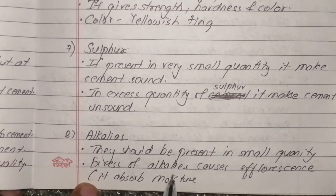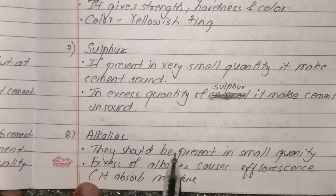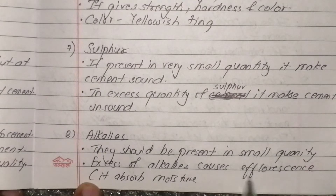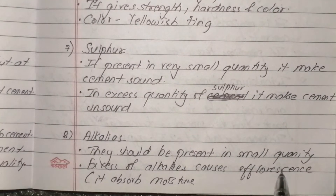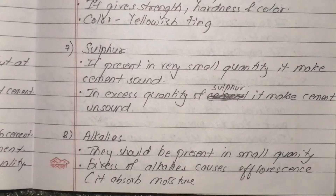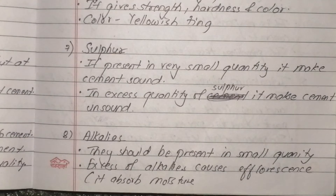Alkalis are present in small quantities. If the amount is in excess, it causes efflorescence - salt deposits appear on the surface. It can cause boiling of particles and result in damp energy when combined with iron oxide.